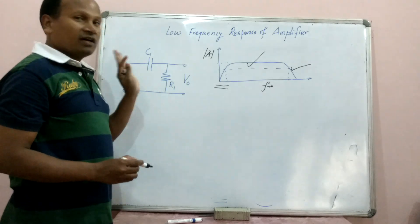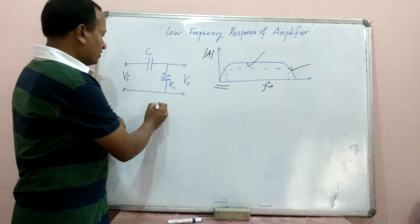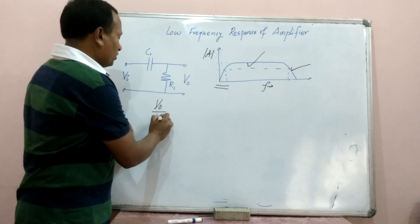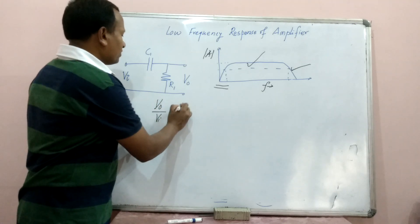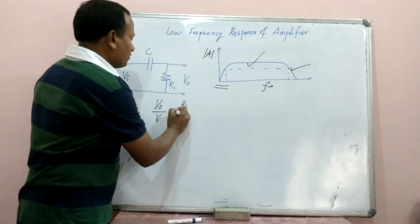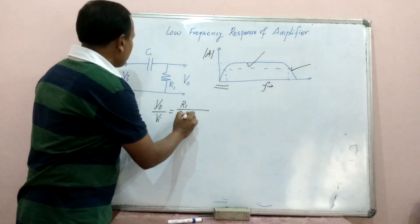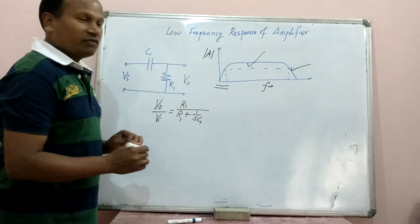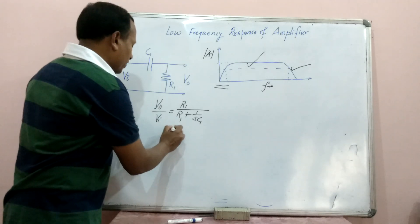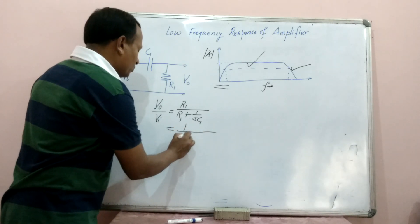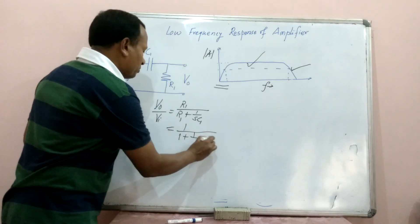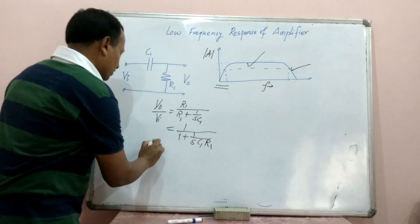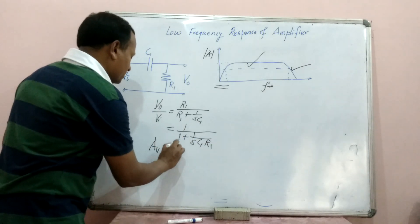We have C1 and R1 in the circuit. Let us try to get VO divided by VI. This is R1 divided by R1 plus 1 upon SC1. We can divide by R1 and write 1 upon 1 plus 1 upon SC1·R1. We can further simplify this expression.